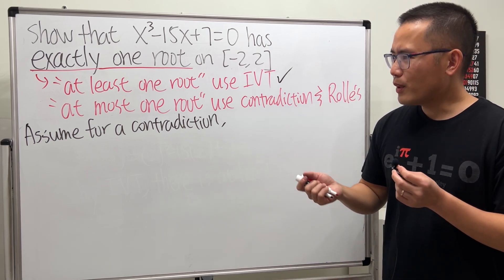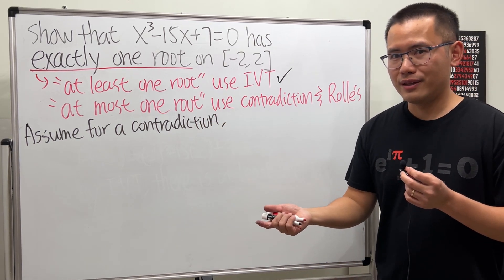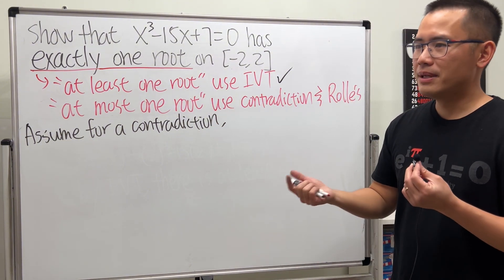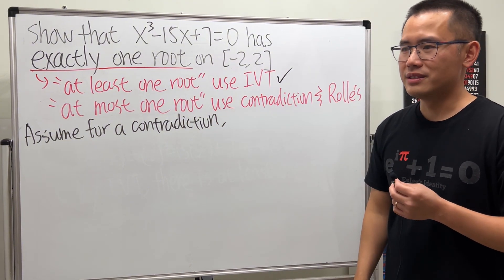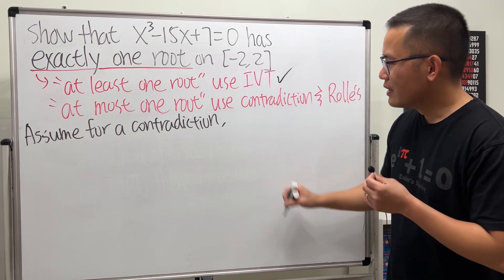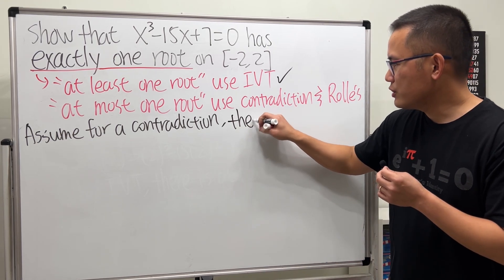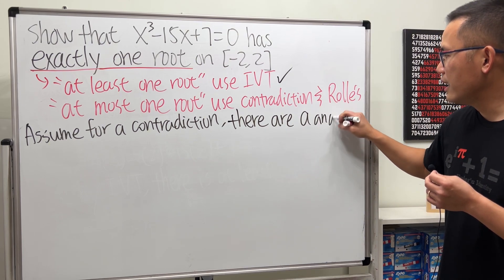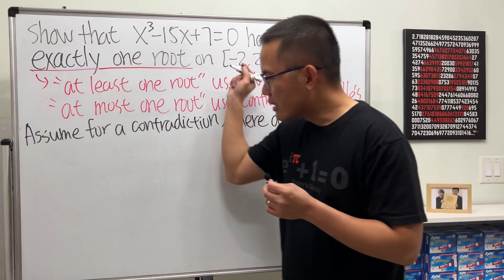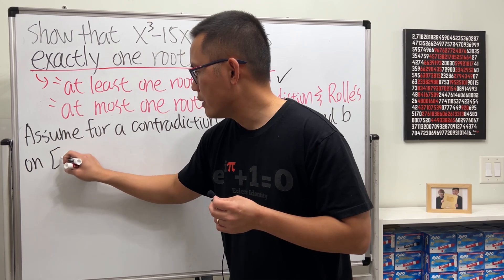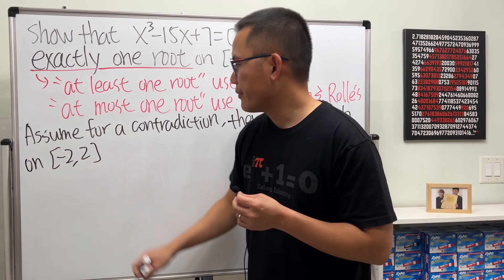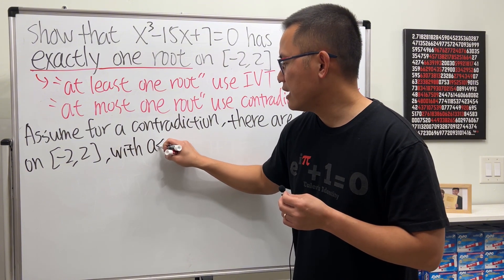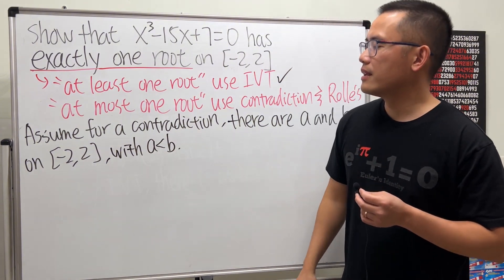But we have to think about what's the opposite of at most one. Well, at most one means less than or equal to one, right? The opposite is just more than one. So we can say: what if there are two of them? So assume for contradiction there are two roots, I will call them a and b, on that interval negative 2 to 2.